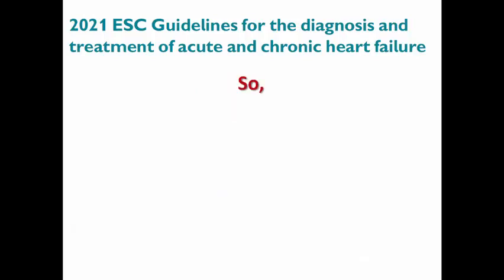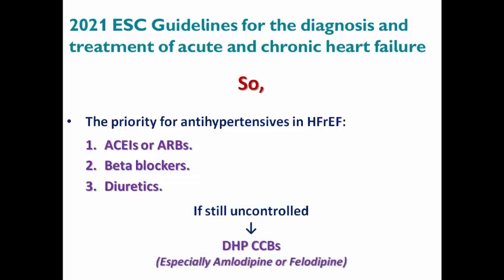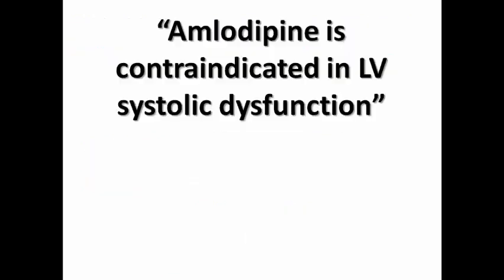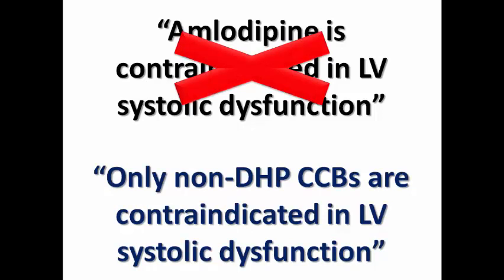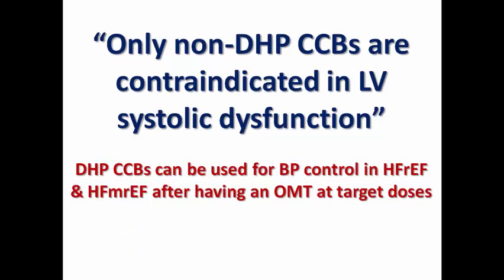To summarize: in patients with heart failure, the priority for antihypertensives is RAS blockers, beta-blockers, and diuretics. If blood pressure remains uncontrolled, DHP calcium channel blockers — especially amlodipine or felodipine — can be used. If a colleague tells you that amlodipine is contraindicated in LV systolic dysfunction, clarify that only non-DHP calcium channel blockers are contraindicated; DHPs can be used in heart failure with reduced or mid-range ejection fraction, but only after optimized medical therapy at target doses — they are the last resort, not the first choice.